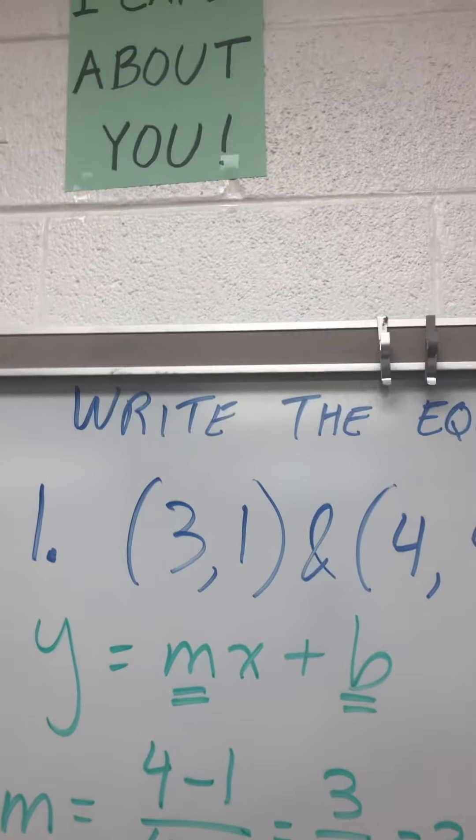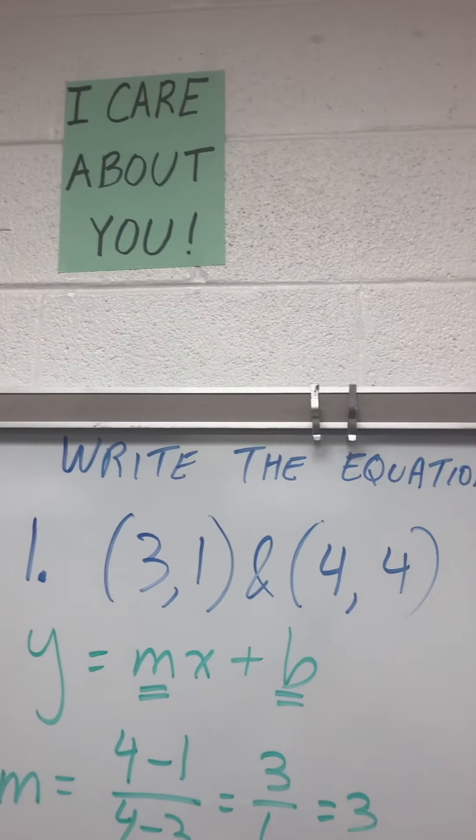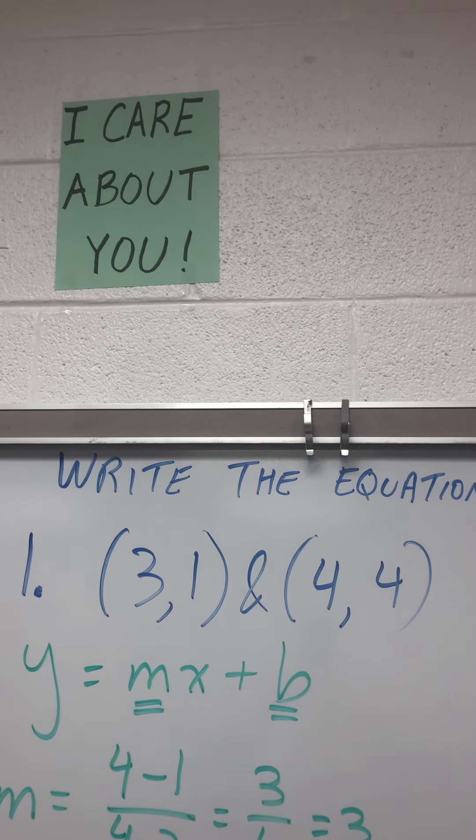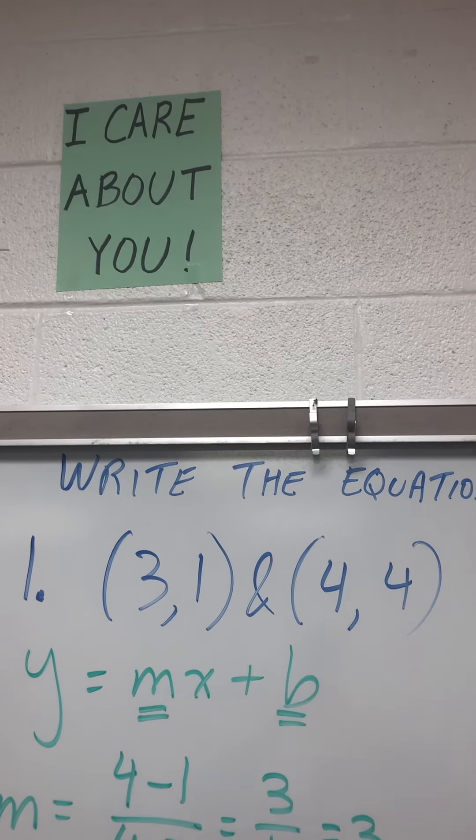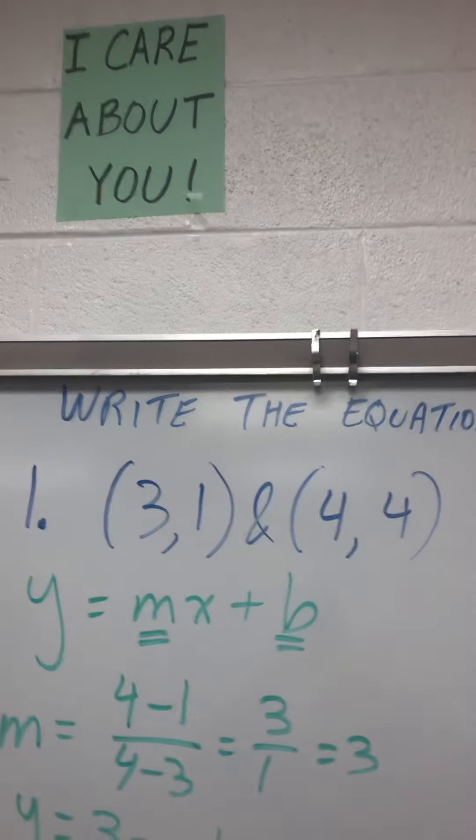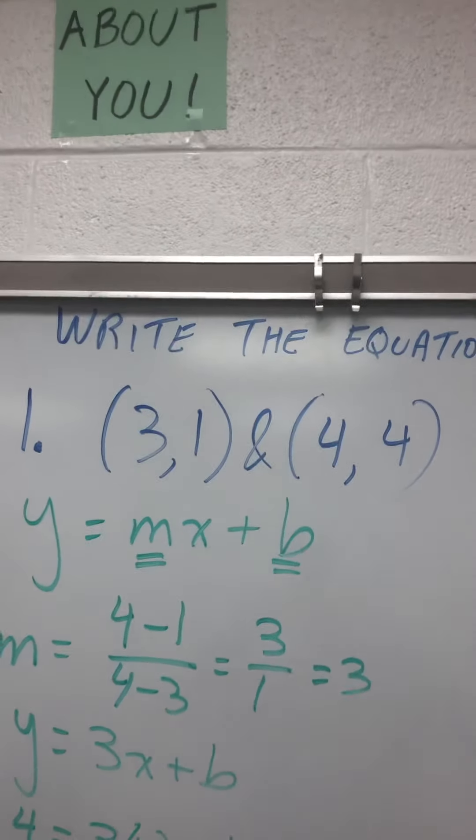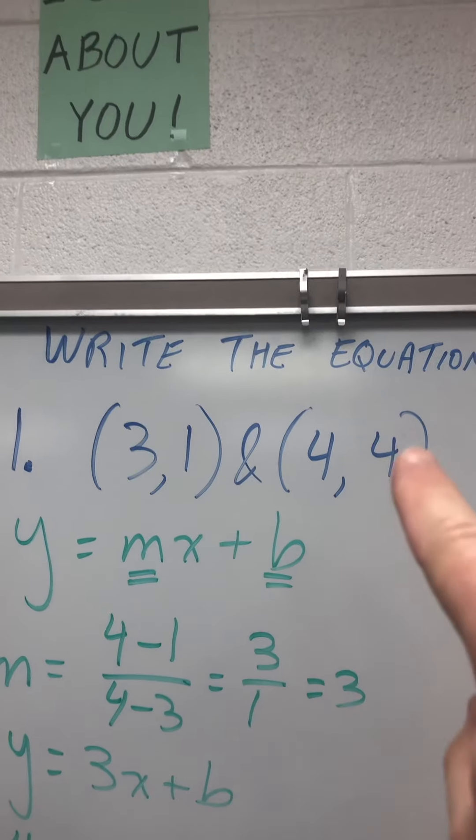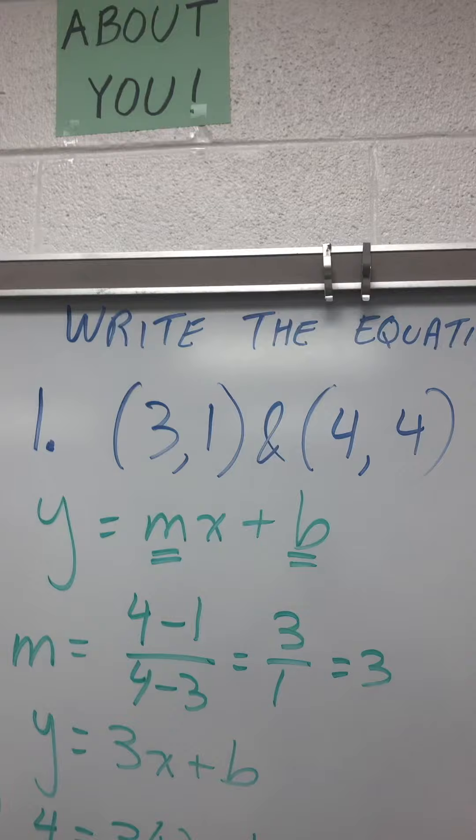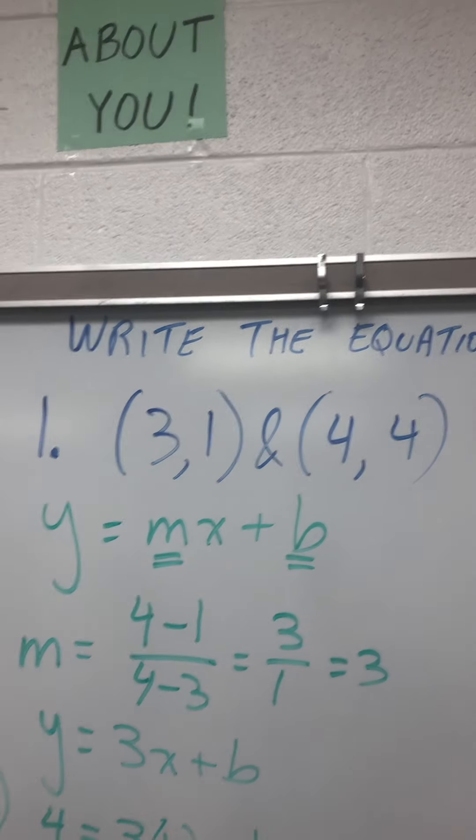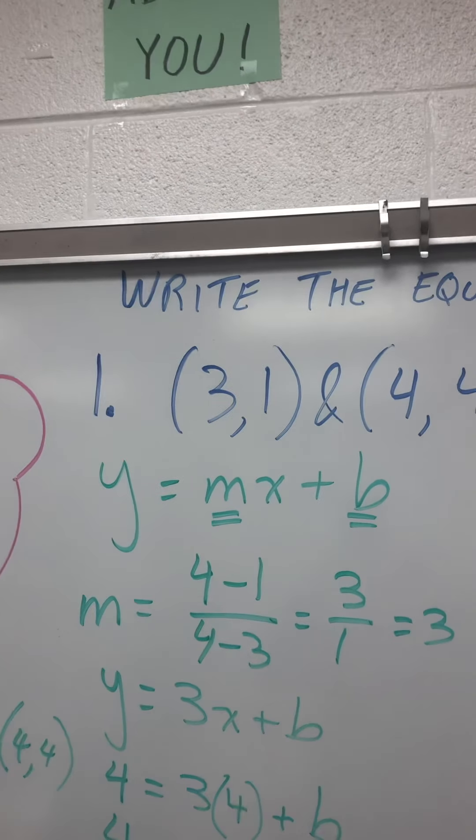For example, through 3, 1 and 4, 4. All you have to do is y equals mx plus b. So first we find m. How do we find m? 4 minus 1 over 4 minus 3, right? y2 minus y1 over x2 minus x1. And you get 3 over 1, which is 3. So y equals 3x plus b.